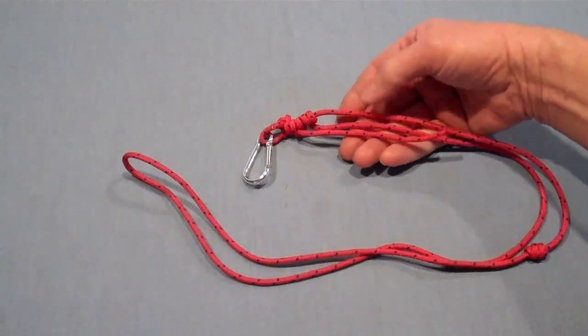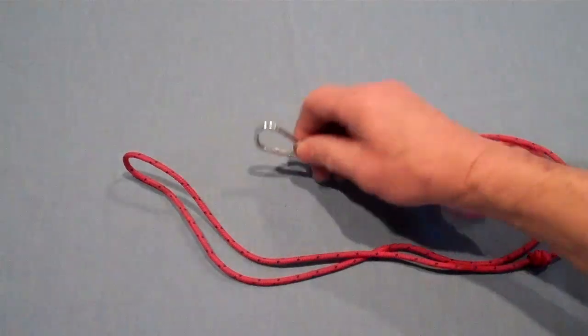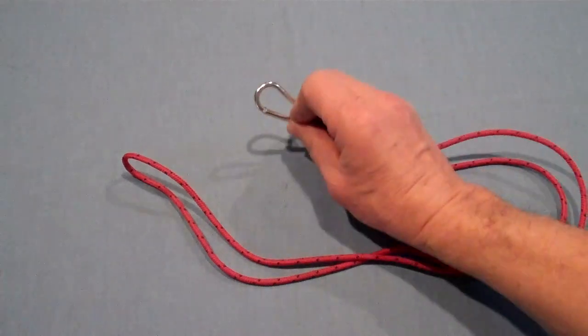We're going to take a length of paracord, about 36 inches, and we're going to take a small carabiner or a snap.